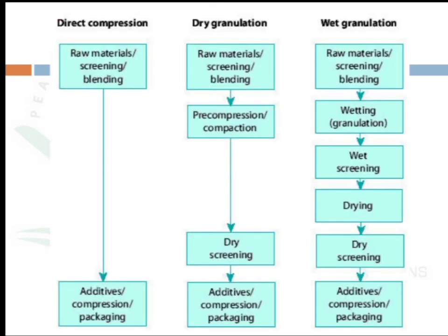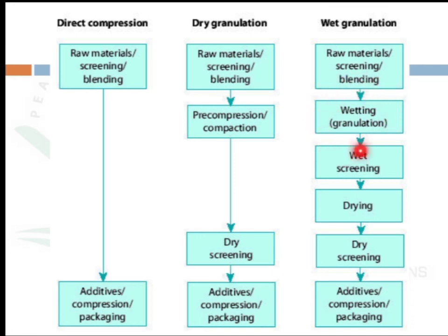In summary: in direct compression, after screening and blending there is no granulation step — the raw material is directly compressed. In dry granulation there is a pre-compression or compaction stage, followed by dry screening to reduce size, adding lubricant, and a secondary compression. In wet granulation, a wet mass is produced using an aqueous solvent, followed by wet screening, drying, dry screening, and then compression.